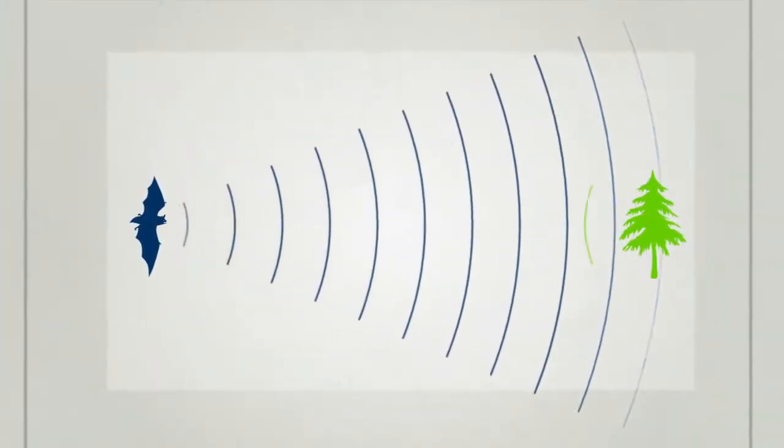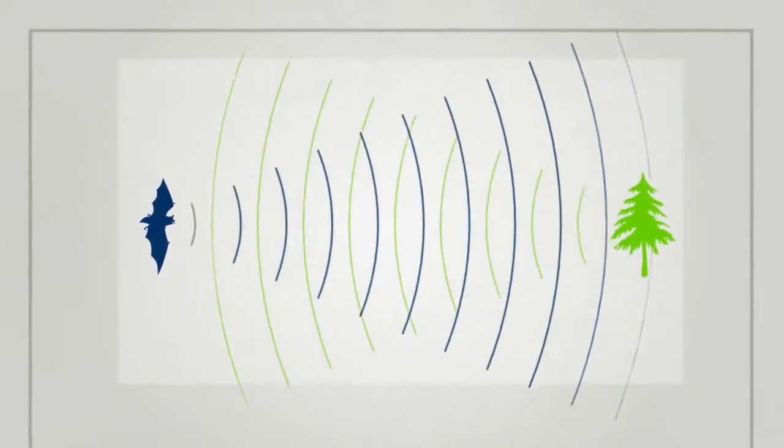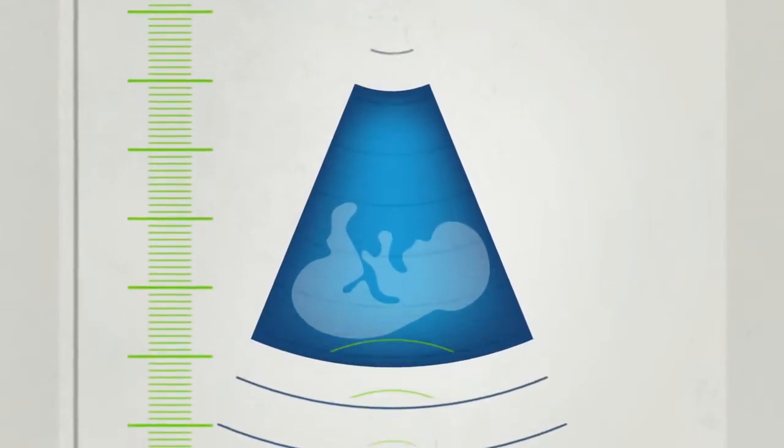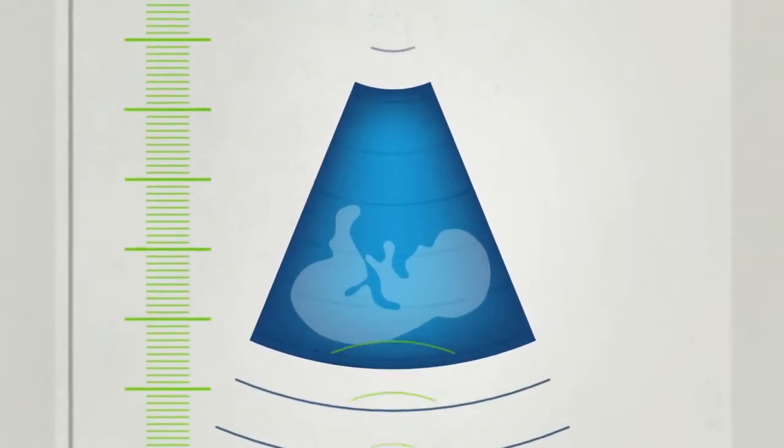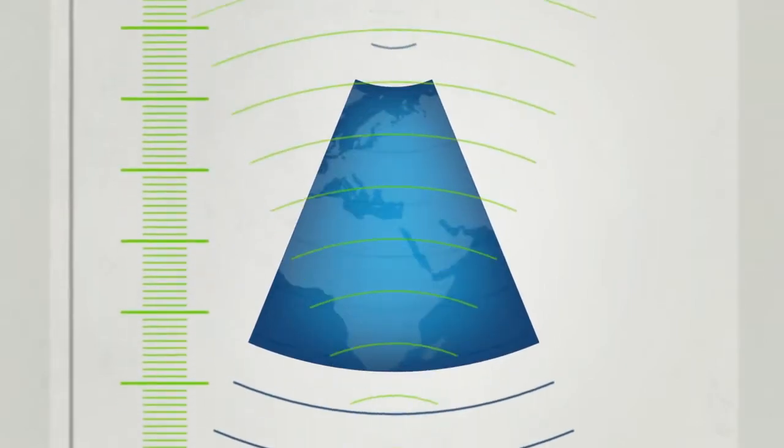Bats have mastered this technique of bouncing sound waves off obstacles to enable them to fly in complete darkness. The same method is used by doctors to look inside the human body without the need for surgery. Seismic analysis essentially generates an ultrasound image of the Earth.